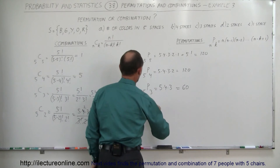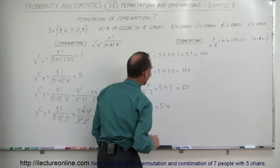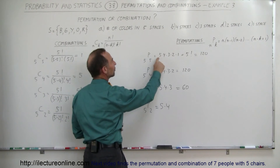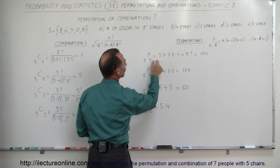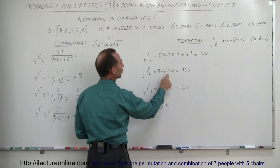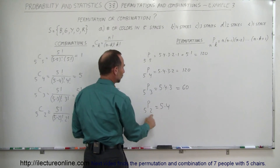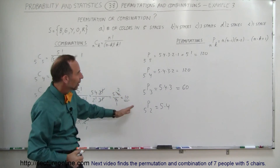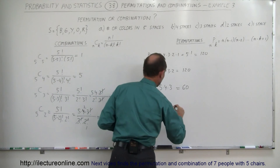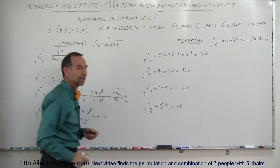For permutations P(5,2): this equals five times four. A helpful pattern: with P(5,5) you start at five and have five terms; with P(5,4) you have four terms; P(5,3) three terms; P(5,2) two terms — so you always start at five and count down the number of terms equal to the spaces. In this case, five times four equals 20, so there are 20 permutations when you have five colors and two spaces.